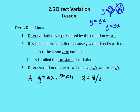So if y is equal to ax, then I can find out what a is by just dividing y by x. So a is equal to y over x — that's our constant of variation.